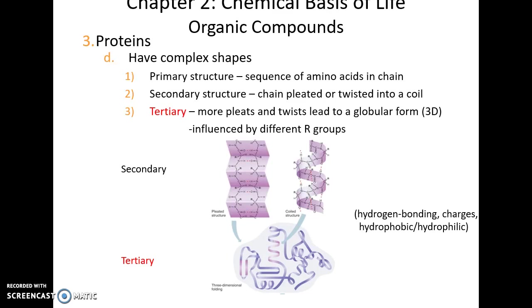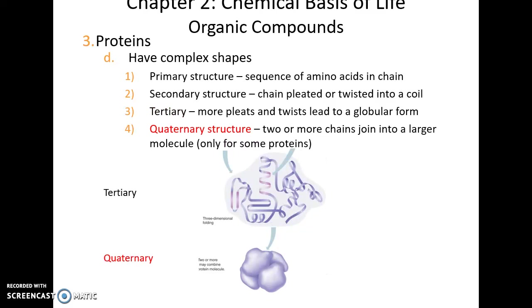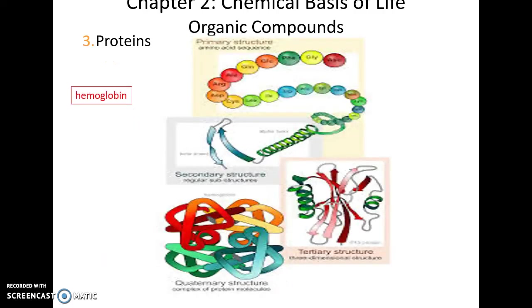Tertiary structures can be long rod-like structures or globular structures. The fourth level — quaternary structure — is only present in some proteins: two or more polypeptide chains come together to form a larger complex. For example, hemoglobin has its amino acid sequence forming secondary coils and pleated sheets that become the tertiary structure, and then four of these polypeptides come together to make an active hemoglobin molecule.